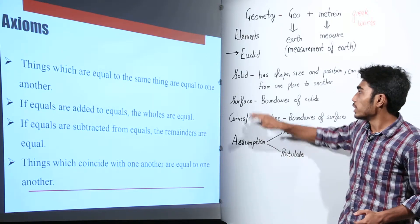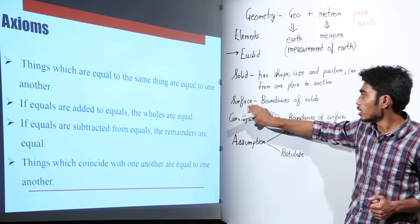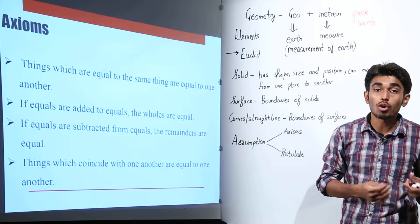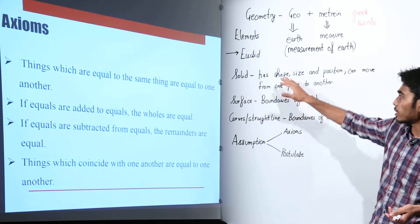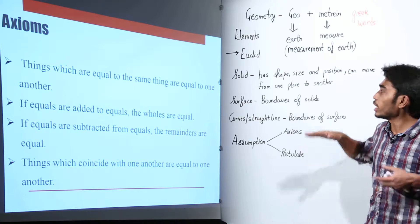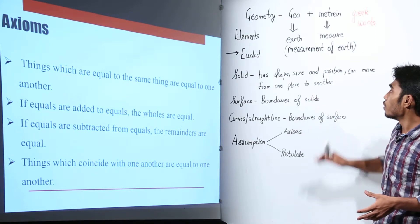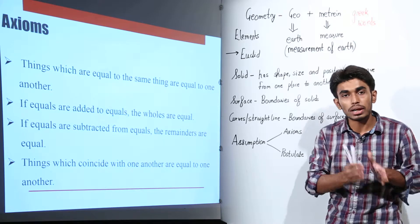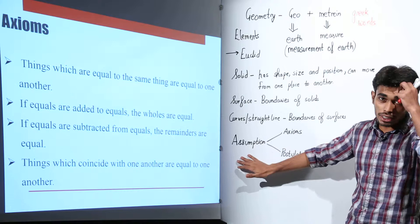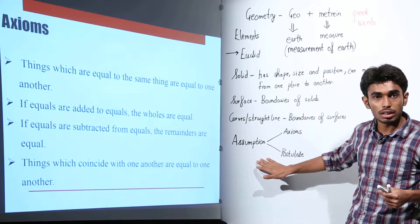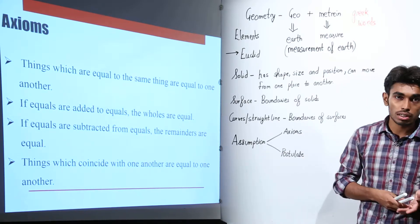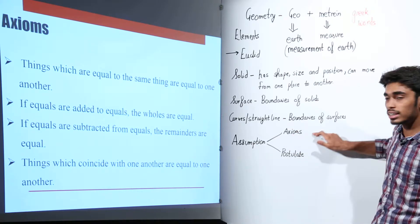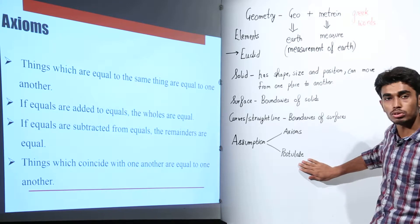These definitions — the definition of solid, surface, and straight line — provided by Euclid were a bit complicated, because the words used in the definitions themselves have to be defined. So we would not use these definitions, but the assumptions made by Euclid were very important to us. He assumed some things which later came out to be universal truths. Some of his assumptions are known as axioms and some are known as postulates.